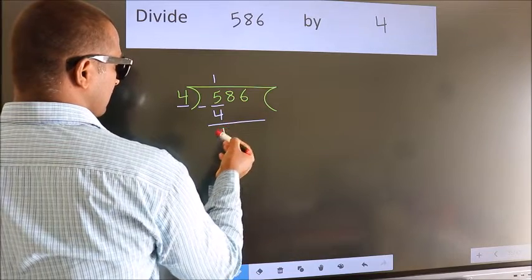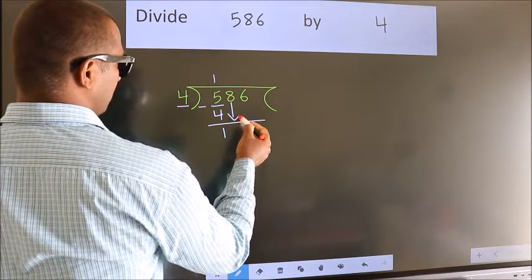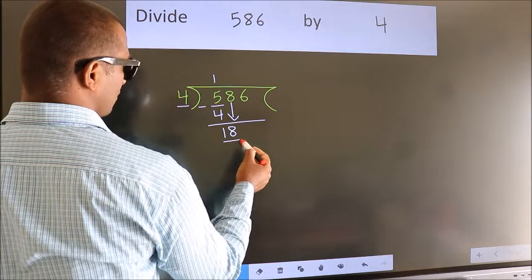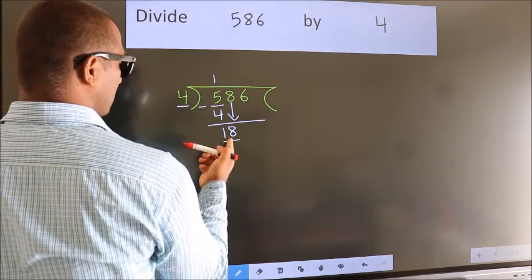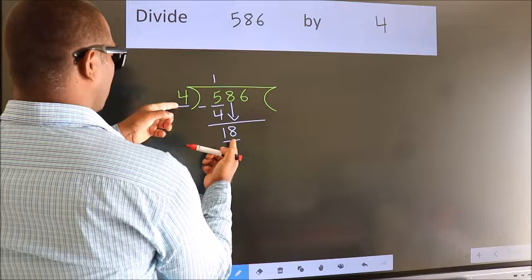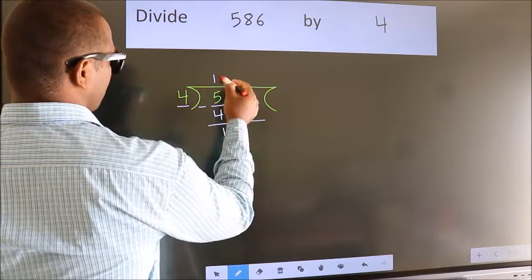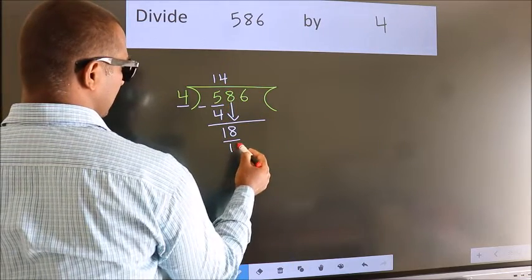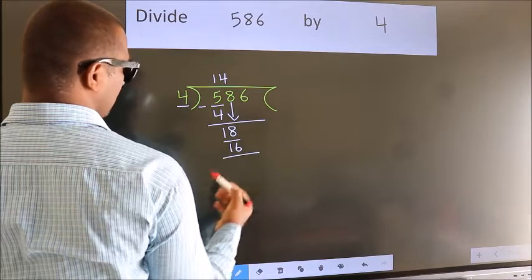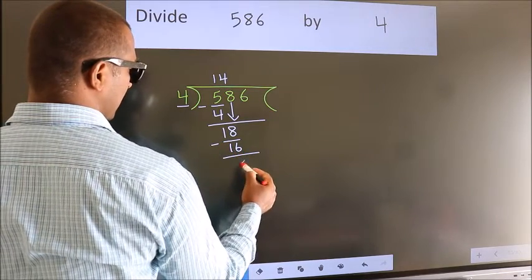After this, bring down the beside number. So 8 down. So 18. A number close to 18 in 4 table is 4 fours 16. Now we subtract. We get 2.